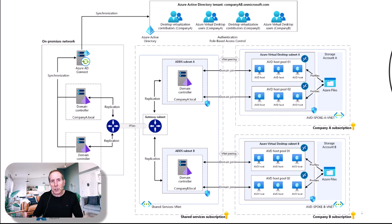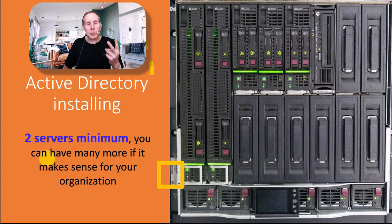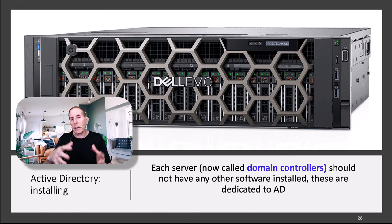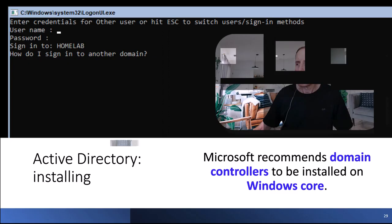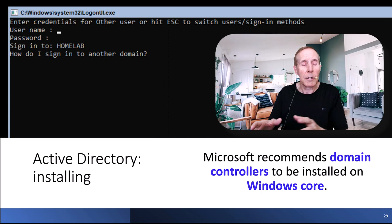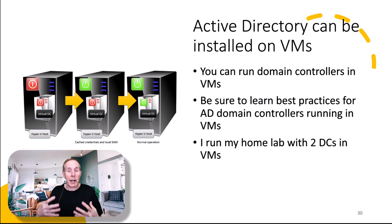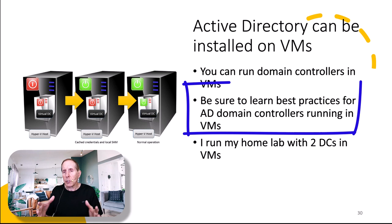Let's get practical. If you're going to install Active Directory, you need two servers minimum — always two domain controllers. Once you take a Windows Server and add Active Directory, it becomes a domain controller. You should not have any other software on your domain controller except Active Directory. Microsoft recommends using Windows Core for the Active Directory install. You can run Active Directory in virtual machines — I run my home lab on two domain controllers on a virtual machine, but be sure you look at best practices.